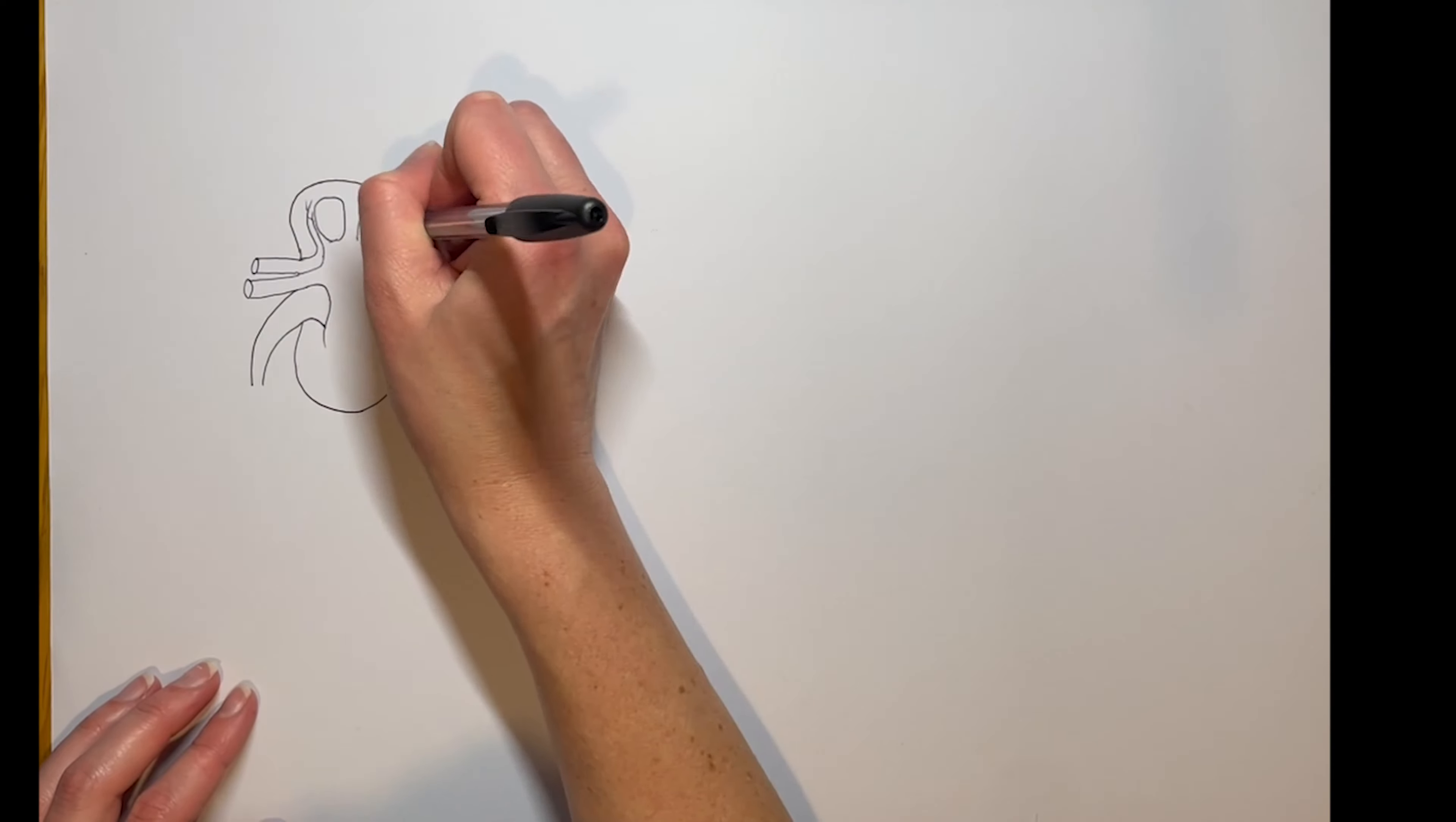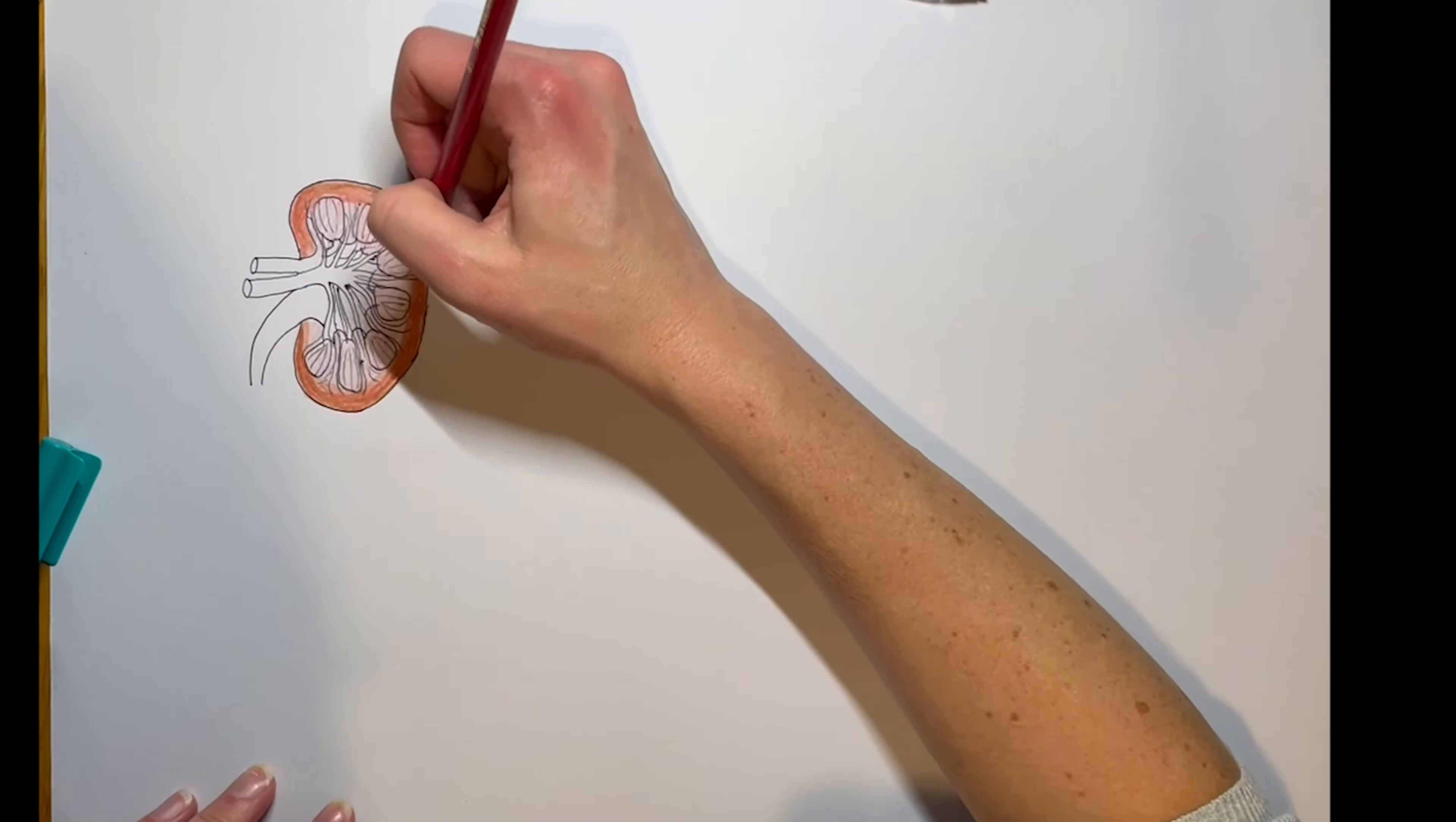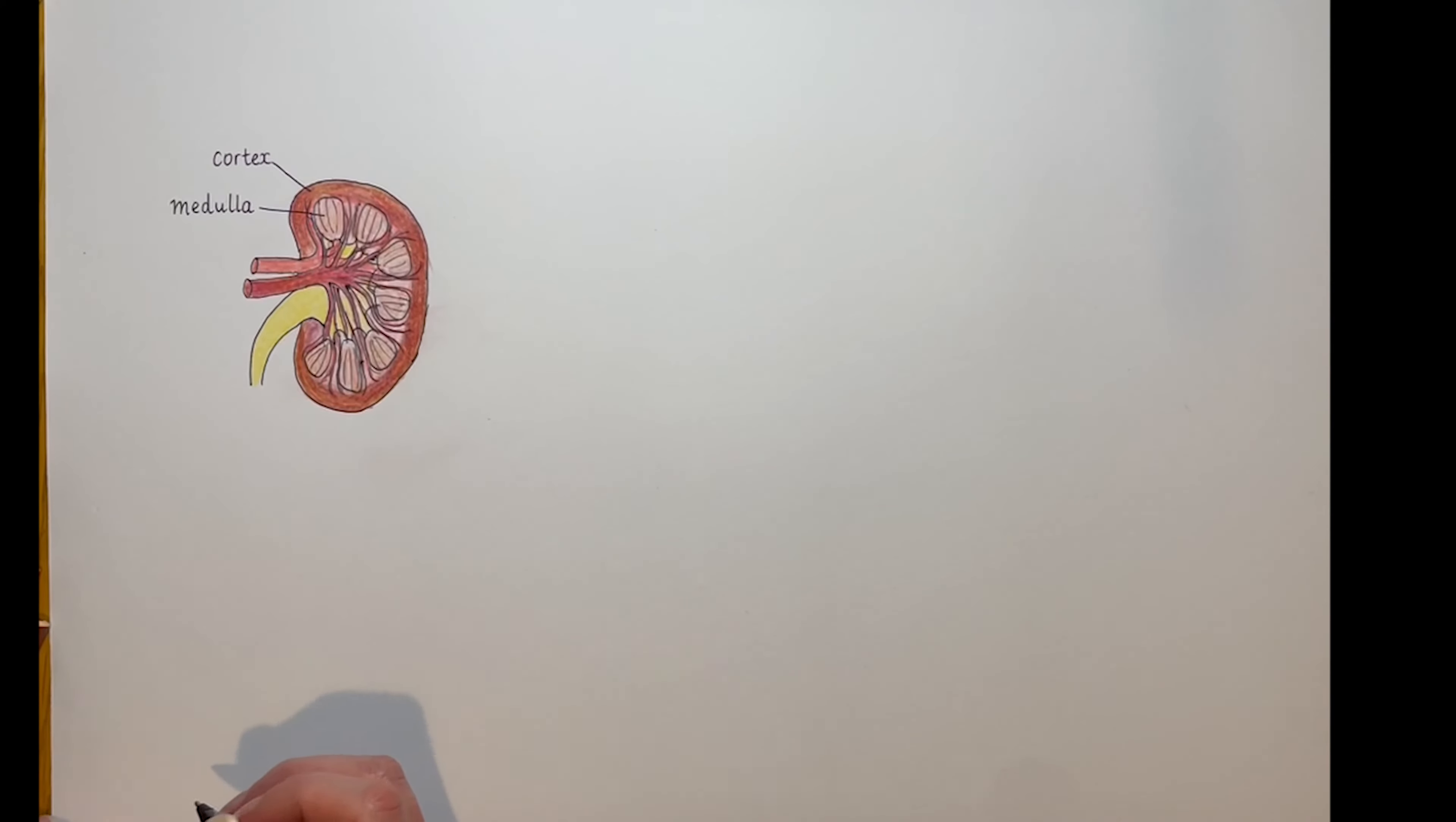The human kidney, unsurprisingly shaped like a kidney bean. Most people have two, and if you let your arms hang by your side, they'll be roughly in line with your elbows, which is higher than most people think. They filter your blood to remove metabolic waste like urea and creatinine and achieve osmoregulation by keeping your water and salts in balance. This bit here is the cortex, Latin for bark, so the outer bit, much like you have a cerebral cortex in your brain.